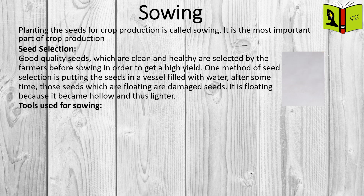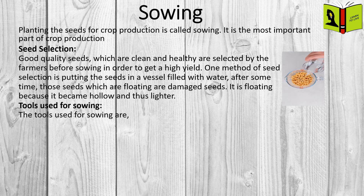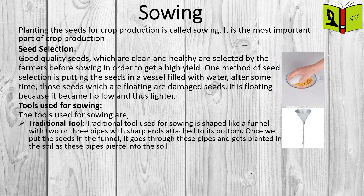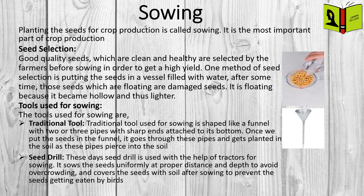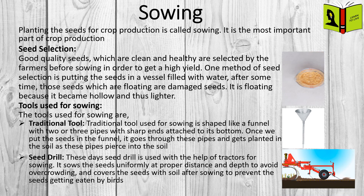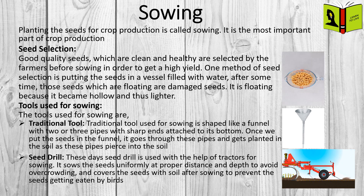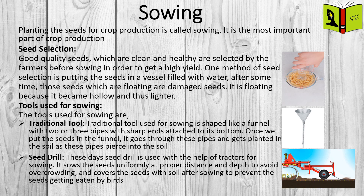There are some tools used by farmers for sowing. The traditional tool used for sowing is shaped like a funnel, with two or three pipes with sharp ends attached to its bottom. Once we put the seeds in the funnel, it goes through these pipes and gets planted in the soil as these pipes pierce into the soil. These days, a seed drill is used with the help of tractors for sowing. It sows the seeds uniformly at proper distance and depth to avoid overcrowding, and covers the seeds with soil after sowing, to prevent the seeds from getting eaten by birds.